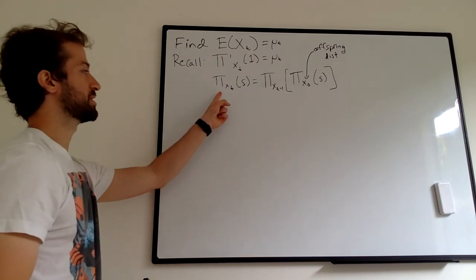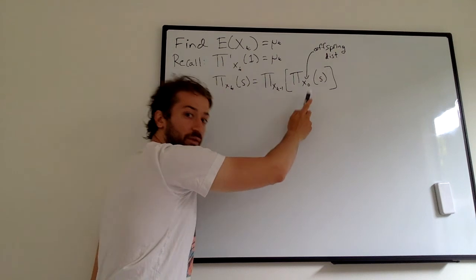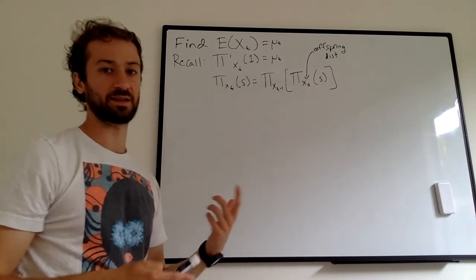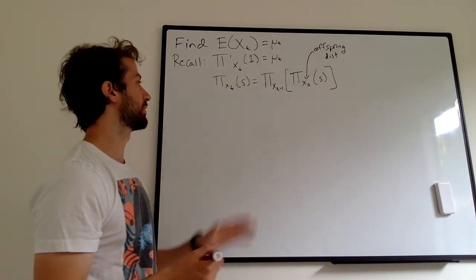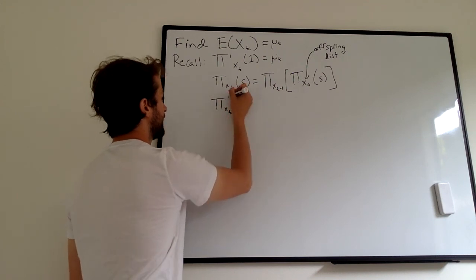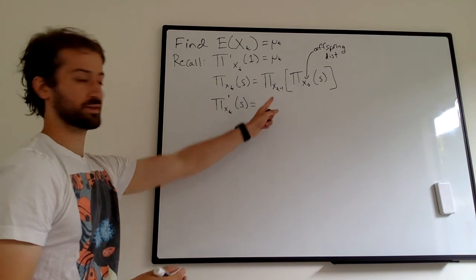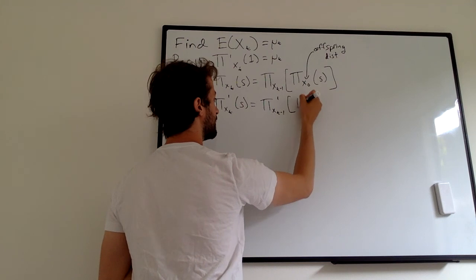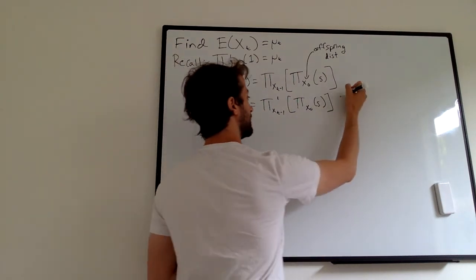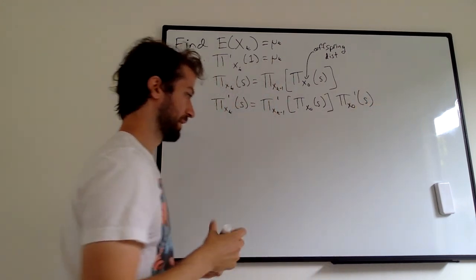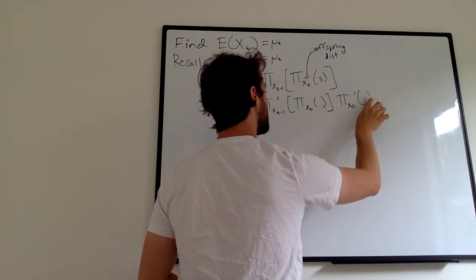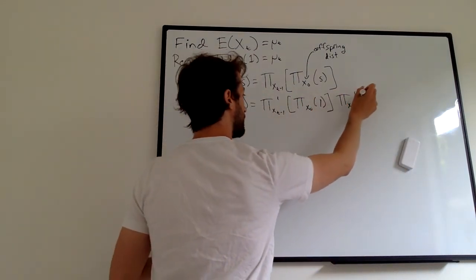If you recall, the PGF of X sub t is basically the PGF of X sub zero composed with itself t times. We just take t minus one of those and we get the PGF of X sub t with one X sub zero left over. Starting with these facts, we differentiate both sides. So the derivative of the PGF of X sub t equals the derivative of the PGF of X sub t minus one composed with the PGF of X sub zero, and because of the chain rule, we differentiate the outside and multiply by the derivative of the inside. We then evaluate everything at s equals one.